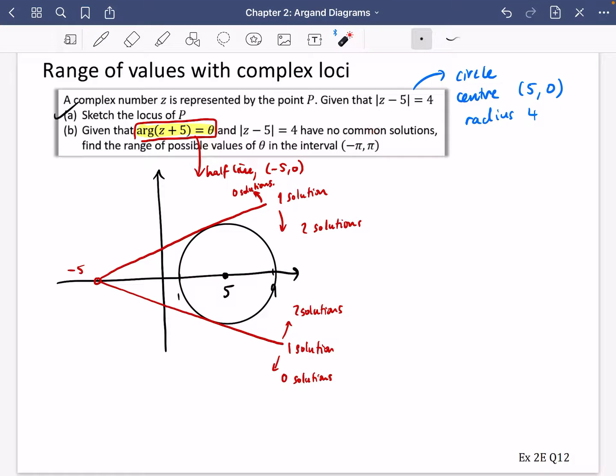So we want there to be no common solutions. Let's figure out this bit to begin with. Now it's a circle, so you probably want to draw on some things that you know. Because it's a circle, I know something about these radii, these radiuses, okay? The length of that line is 4. I also know the length of this line here. The length of that line is 10.